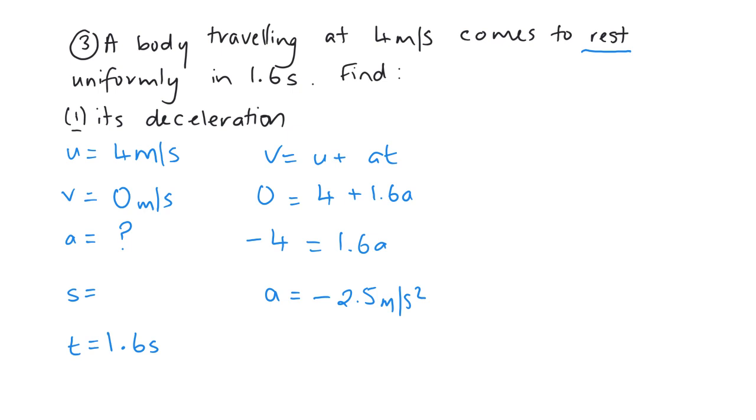But that's the acceleration. The question asks you for the deceleration. So we say the deceleration is 2.5 meters per second squared. The D bit in it implies that it's negative acceleration. So if you have an acceleration of minus 2.5, your deceleration is 2.5 meters per second squared.